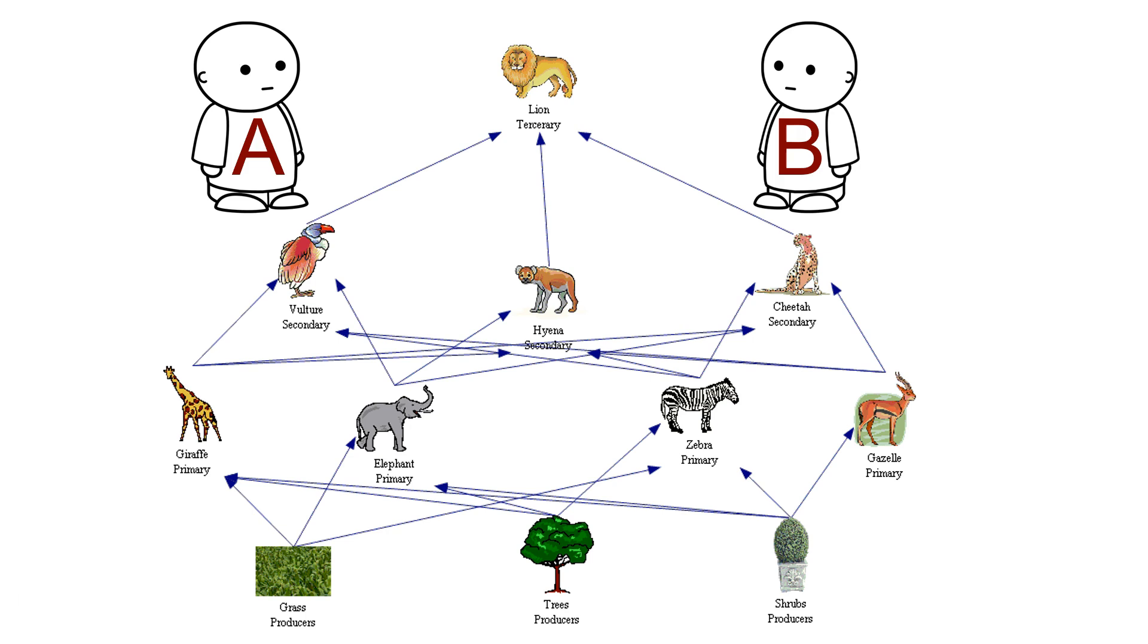While learning, Child A might become overwhelmed by the high interactivity of new knowledge presented in the food chain, given she's simultaneously trying to process the names of the new animals and their interactions.